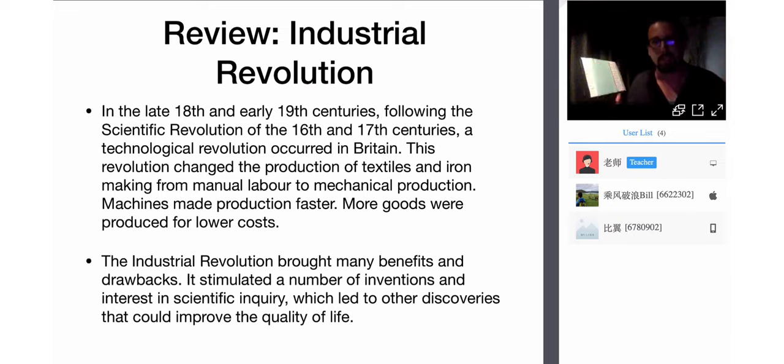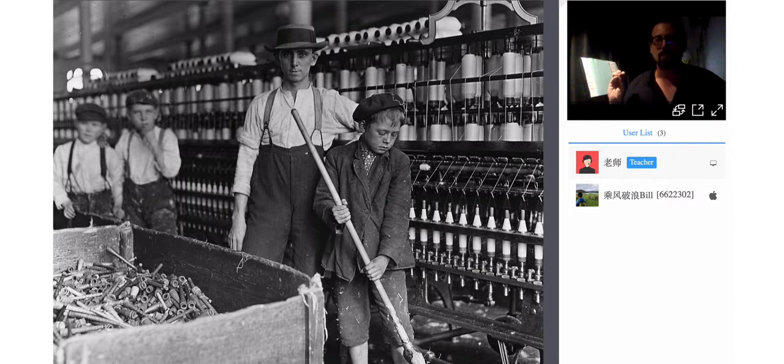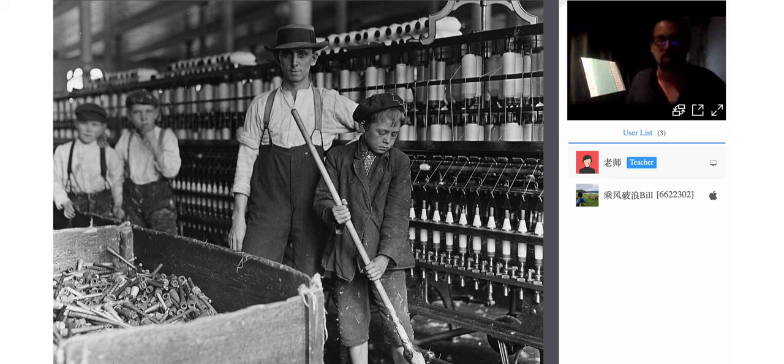Machines made production faster. More goods were produced for lower costs. The Industrial Revolution brought many benefits and drawbacks and stimulated inventions and interest in scientific inquiry, which led to discoveries that improved the quality of life. As an effect of people coming in from the rural country into the cities to work in factories, they got to learn practical, useful skills that they could earn a wage for.